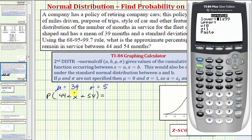the first thing we do is enter the lower x value, which is 44. So 44, enter. The upper x value is 54. So 54, enter.